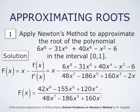This simplifies to (42x^8 plus 120x^4 minus x^2 plus 6) divided by (48x^7 minus 186x^5 plus 160x^3 minus 2x). This is the function capital F which we use to approximate the solution.